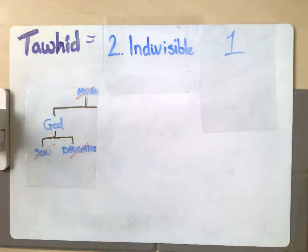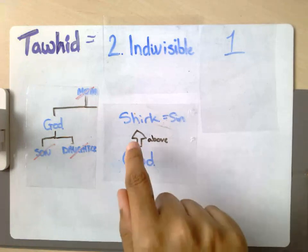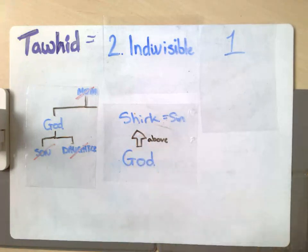In terms of how that influences Muslims in their day-to-day life, this indivisibility of God, it means that Muslims do not treat anything but God as though it is worthy of worship. So nothing else in the universe is worthy of being worshipped in the same way that God is. If Muslims do treat something or someone as though they are worthy of worship, it's actually the one unforgivable sin in Islam. So to put anything above God is to commit the sin of shirk, and that is the one thing that cannot be forgiven.